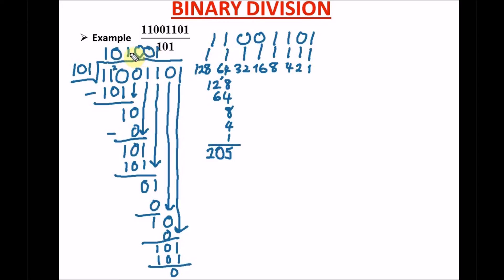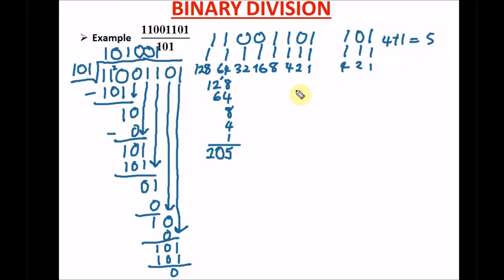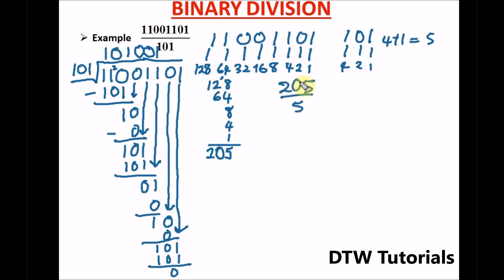So our dividend converts to 205 in decimal. Now let's also convert the divisor 101 in binary to decimal. The positional values are 1, 2, 4. Since the digits are 1, 0, 1 we have 4 plus 0 plus 1 equals 5. So we now have 205 divided by 5 in decimal. 5 into 20 is 4, and 5 into 5 is 1, giving us 41.